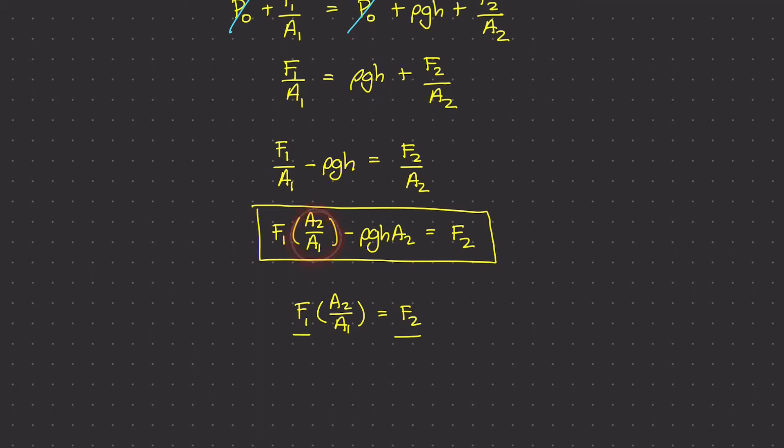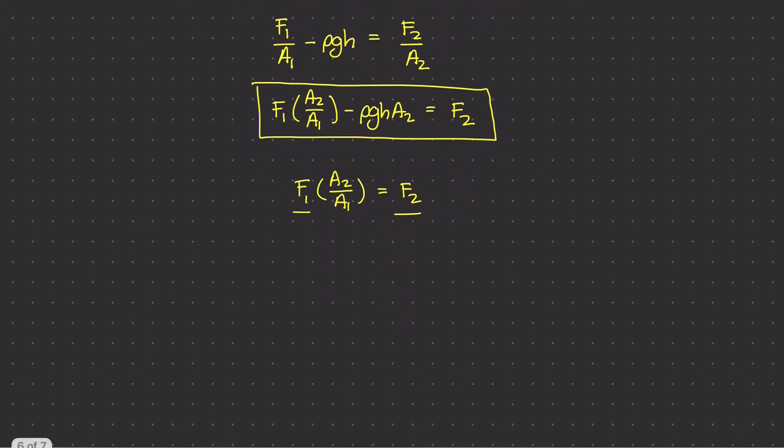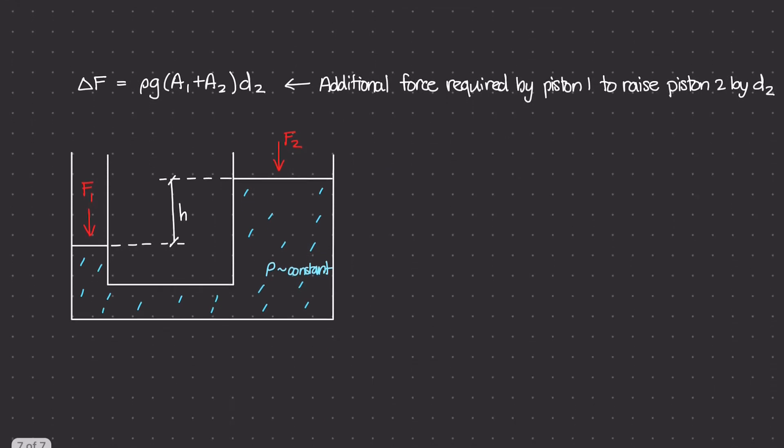Which was this A2 over A1, the ratio of area 2, the piston area 2 over the piston area 1 minus rho g h times the area of piston 2. So we're going to continue on with this and try to derive this equation.